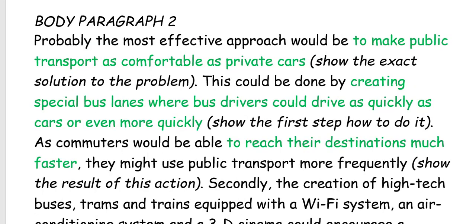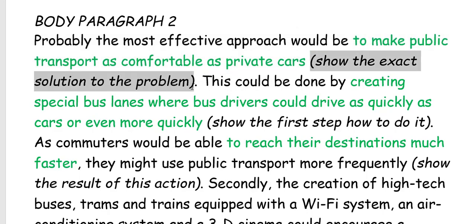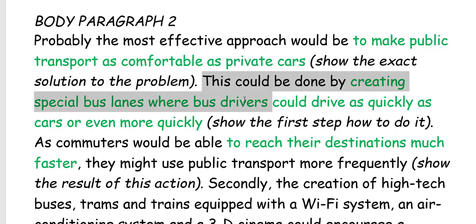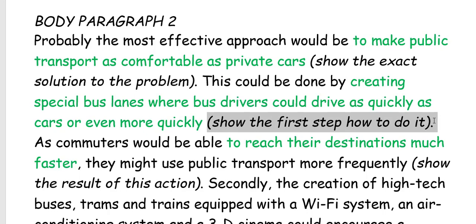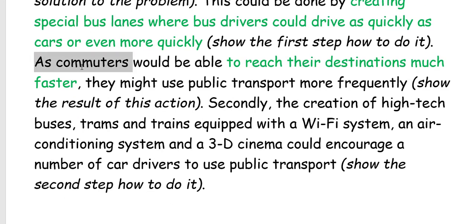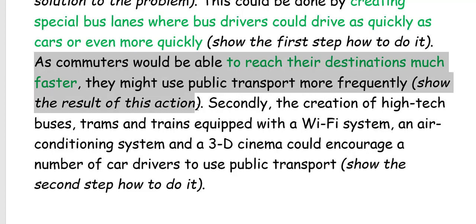Now let's look at the second body paragraph. 'Probably the most effective approach would be to make public transport as comfortable as private cars.' Here you must show the exact solution to the problem in the first sentence. Next: 'This could be done by creating special bus lanes where bus drivers could drive as quickly as cars or even more quickly.' This is the first step. As a result, commuters would be able to reach their destinations much faster and might use public transport more frequently.